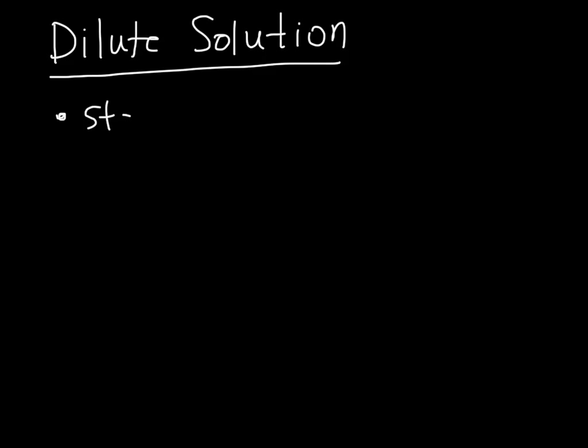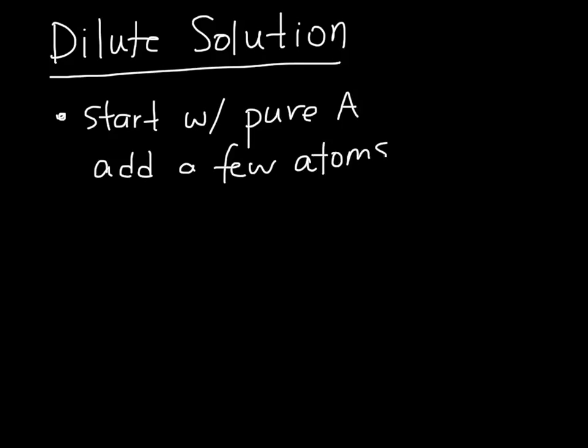Let's consider how the activity varies with composition for the limiting case of a dilute solution. A dilute solution is one where we either have mostly A with a little bit of B or mostly B with a little bit of A. So let's consider a case where we start with pure A and we add a few atoms of B.